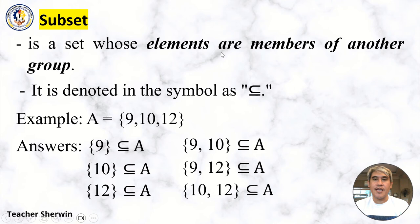As you can see, elements are members of another group. Since we're talking about 9, 10, and 12, we can take single numbers or pairs and make them subsets. They come from the original set, which is why it's called a Subset.